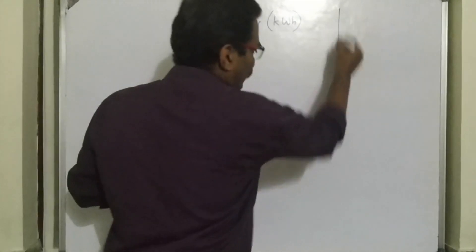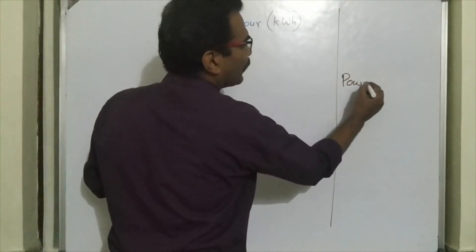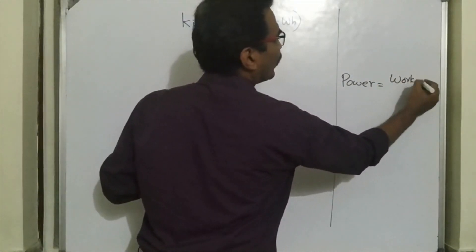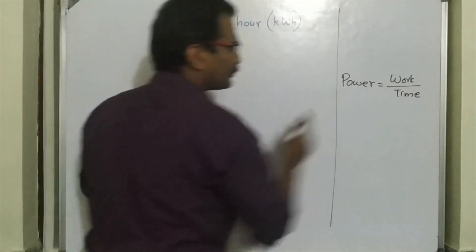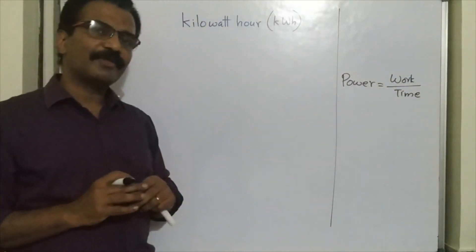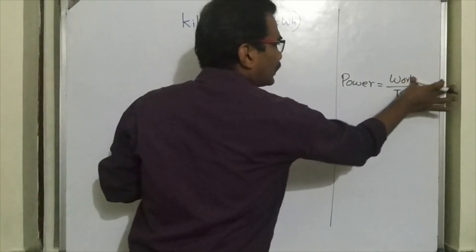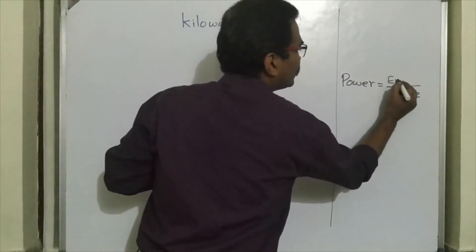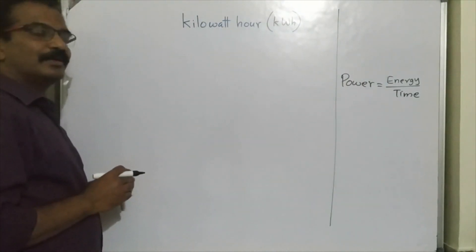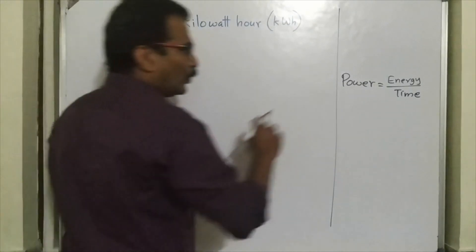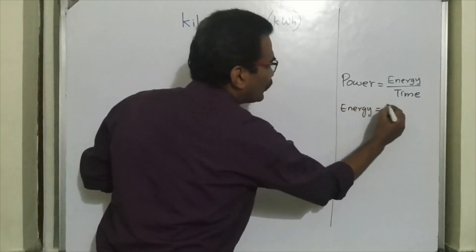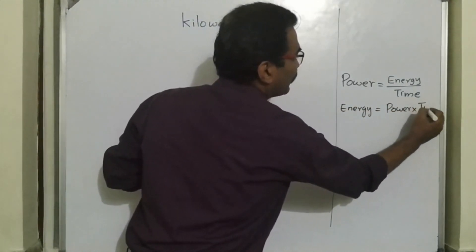Before defining kilowatt-hour, let me revisit the definition of power. Power is equal to work done divided by time. Since work done equals energy spent, power is equal to energy spent divided by time. Rearranging, energy spent is equal to power multiplied by time.